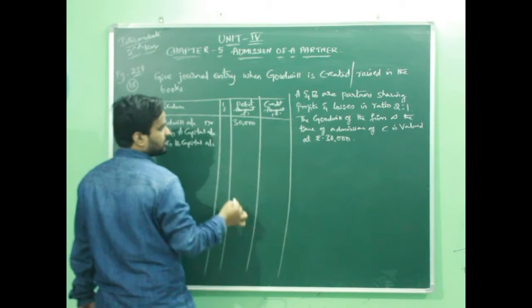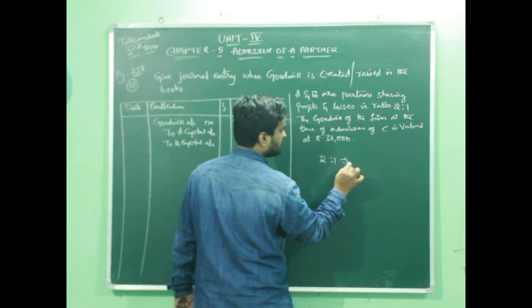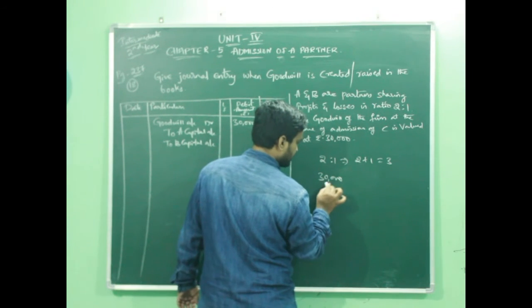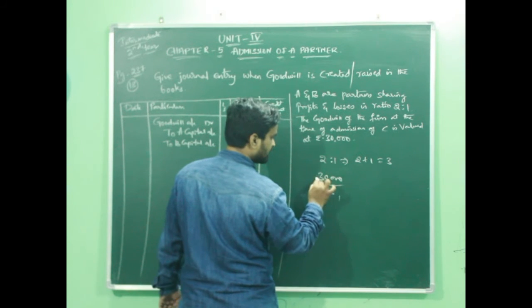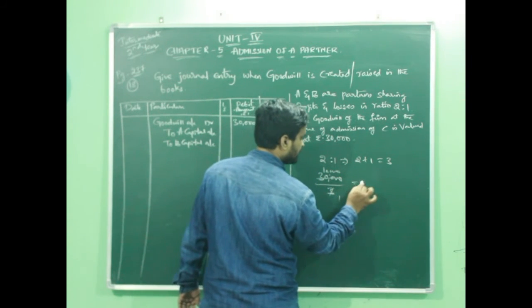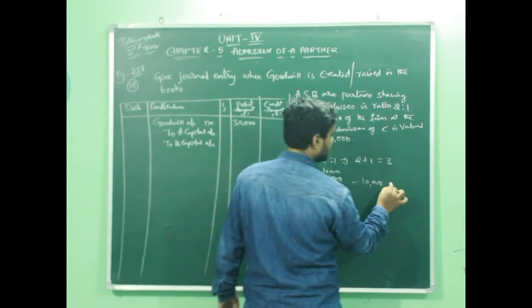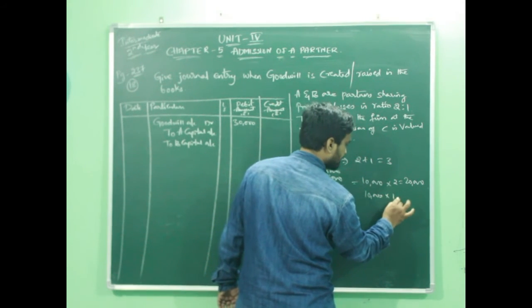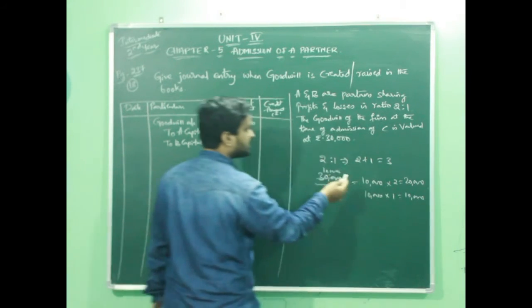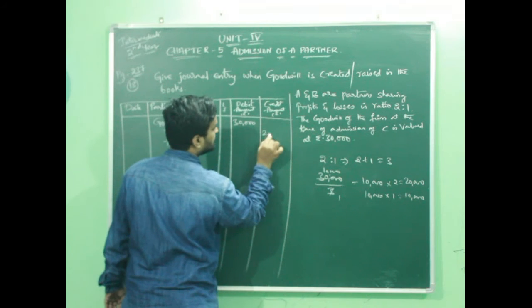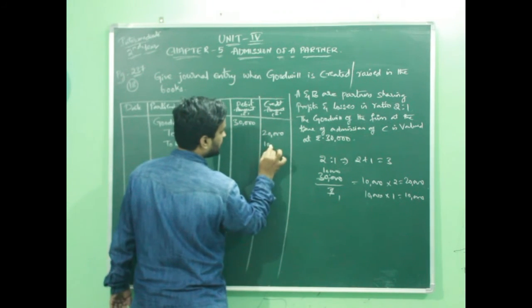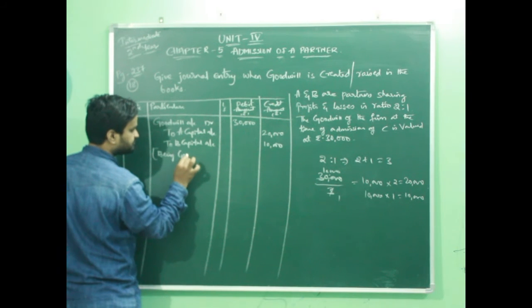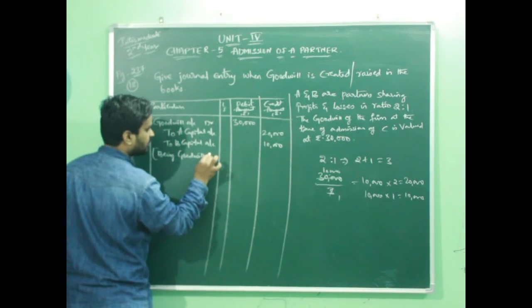Their profit sharing ratio is 2 is to 1, that is 2 plus 1 it becomes 3. Whatever the amount is to be distributed, 30,000, this will be divided into 3 shares. 3 ones are 3, 3 tens are 30. The value of each share is 10,000. A has 2 shares, so his share will be 20,000, whereas B has only 1 share, so his share is 10,000.